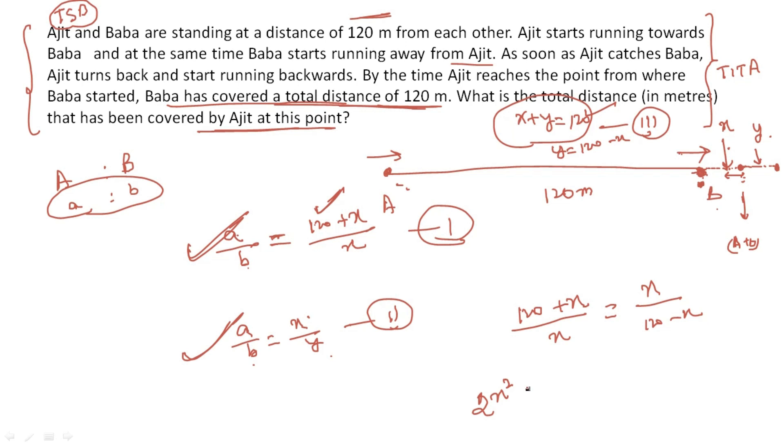Now solve from here. A quadratic equation will come. So x square, when you multiply here, this becomes 2x square. Then you'll have 120 whole square. From here, the value of x comes out to be 60 root 2. This is the distance. But Ajit is also returning back. So total distance Ajit has covered is 120 plus this 60 root 2, which is this distance, but he's also returning, so this is multiplied 2 times.